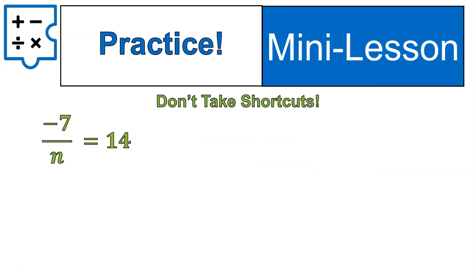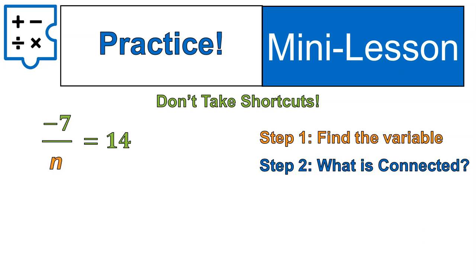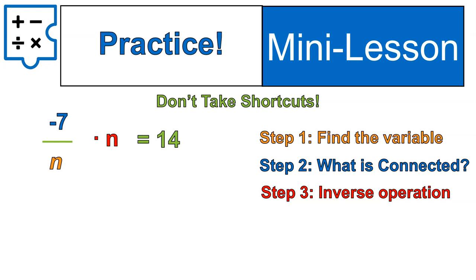Here's one that has that variable of n in the denominator. You're going to have to follow exactly what we did on the previous slide. Find our variable n. What's it connected to? Negative 7. I do the inverse, which in this case is multiplying times n. Then when I simplify that down, I will get negative 7 on the left, 14n on the right.